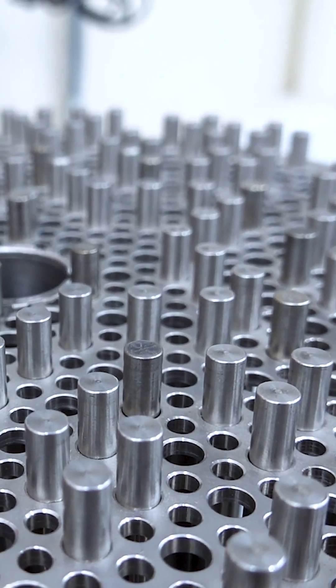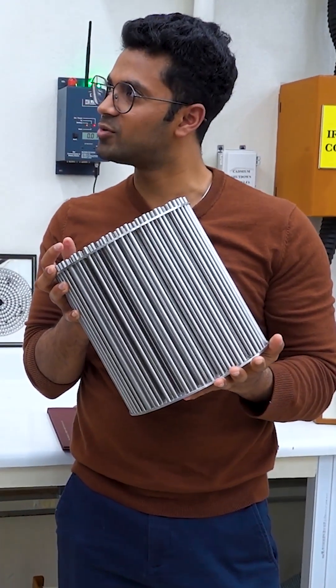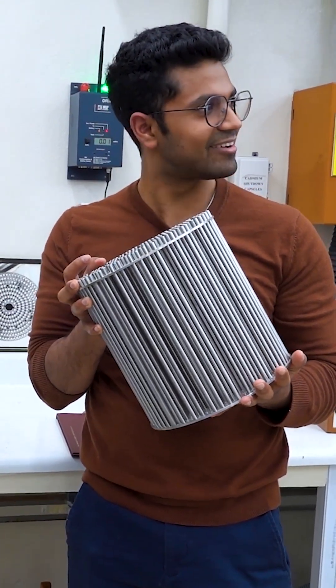All right, friends, so you are seeing the slowpoke reactor core. It kind of looks like a small Kandu, to be honest. Like a Calandria? Yes, yeah.